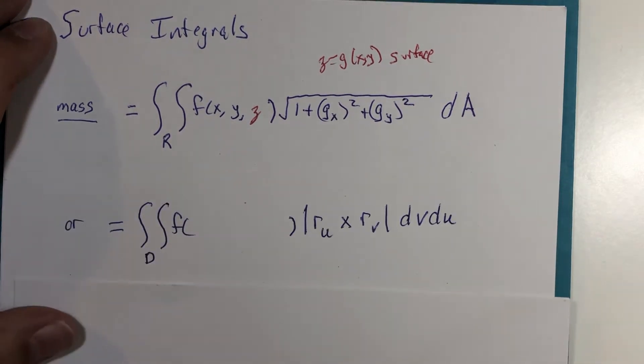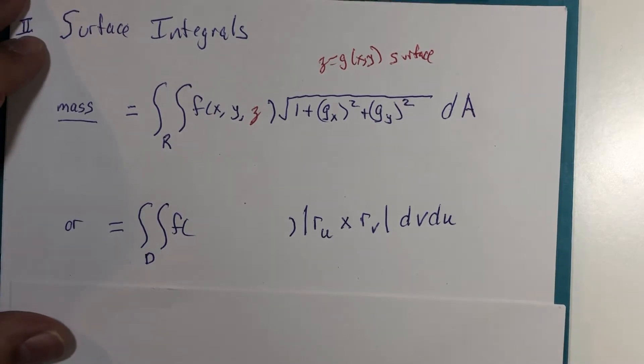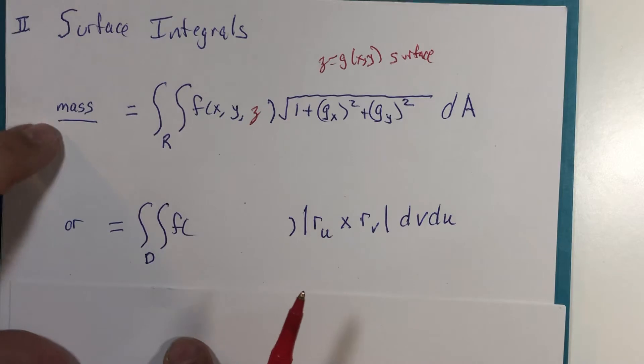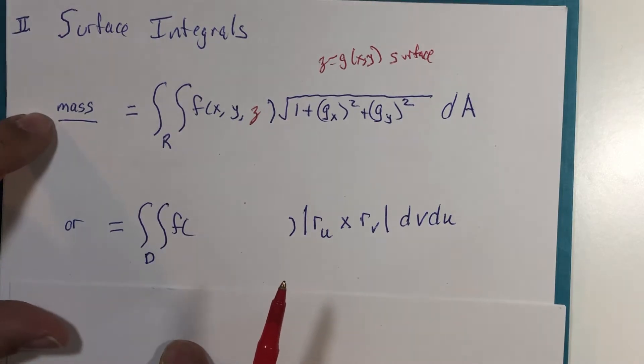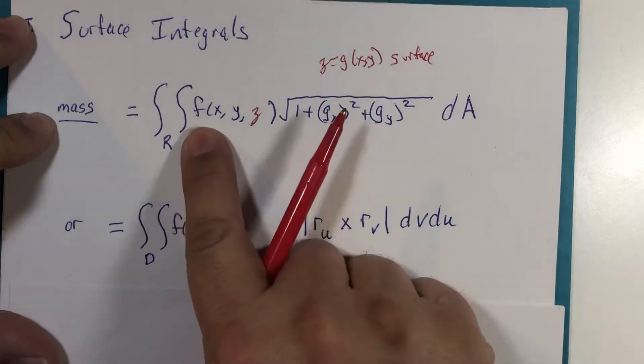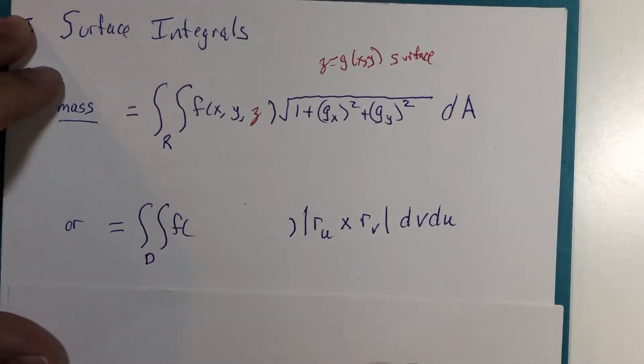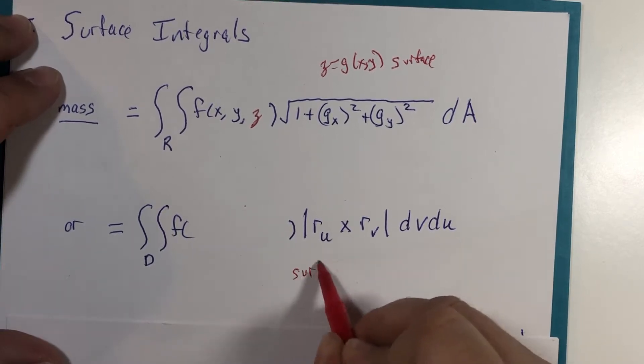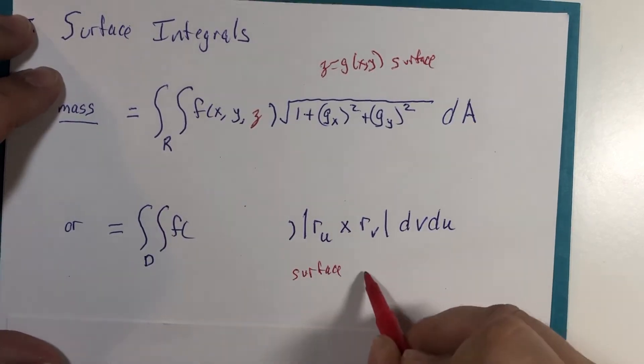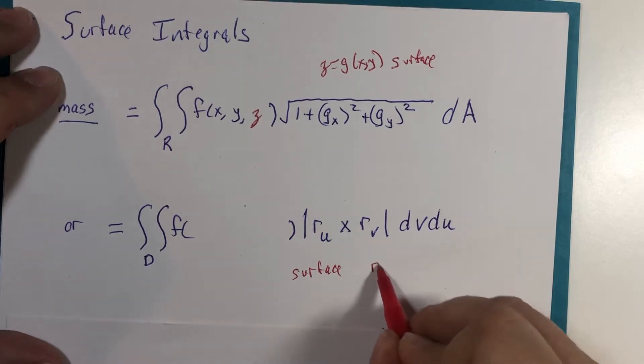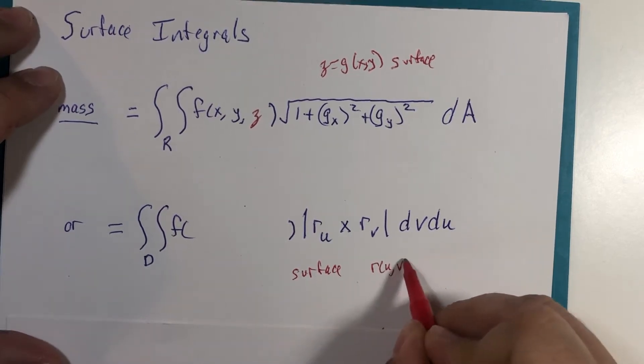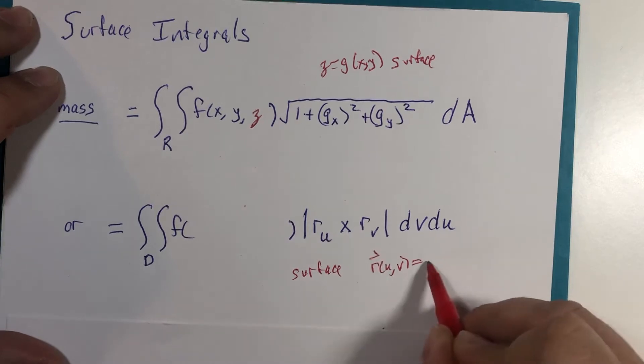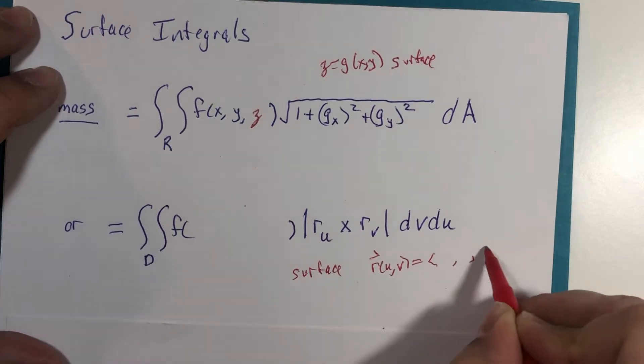So the parametric version of this same measurement, and I call it mass even though there are definitely other ways you could use the surface integral to measure things, so that this is density. The parametric version says that our surface is the r of u, v equals, and you're provided a vector with three components.